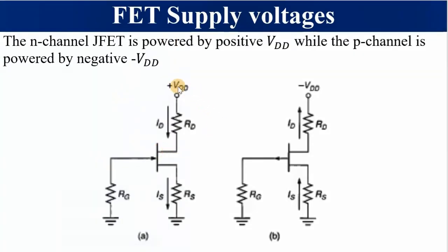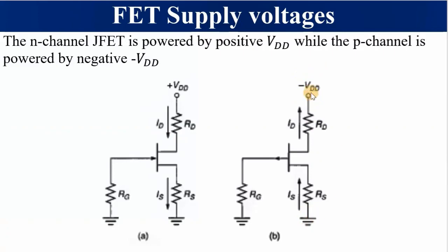For an N-channel JFET, the supply voltage VDD is positive, while for a P-channel it is negative VDD. The circuit includes a drain resistor Rd, source resistor Rs, and gate resistor Rg. Because the supply is positive for N-channel, drain current flows downward through Rd. For a P-channel, drain current flows toward the negative supply voltage.